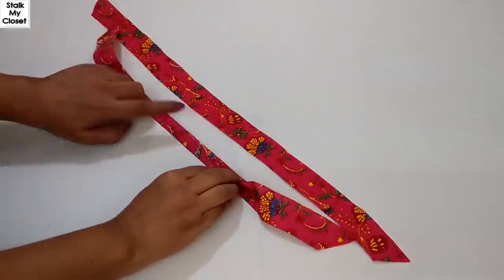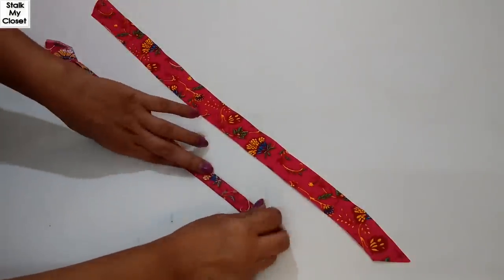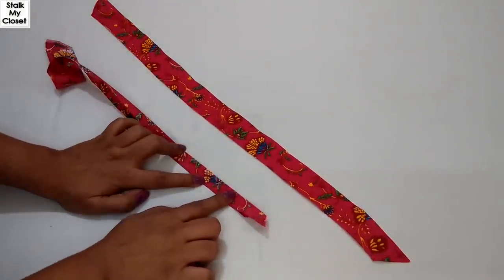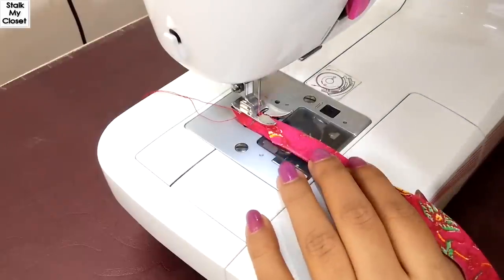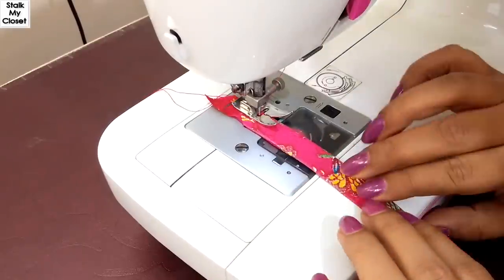Fold the strip by half in width, right sides together, and make a stitch at around 0.25 inches. I made a stitch.